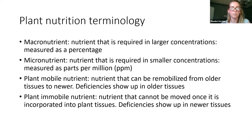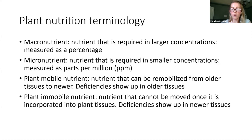A macronutrient is a nutrient required in larger concentrations and tends to be measured as percentages, while a micronutrient is required in smaller concentrations and measured in parts per million. Macronutrients are not more important than micronutrients—they're all required by the plant. You just need to apply more of a macronutrient than a micronutrient when supplementing.